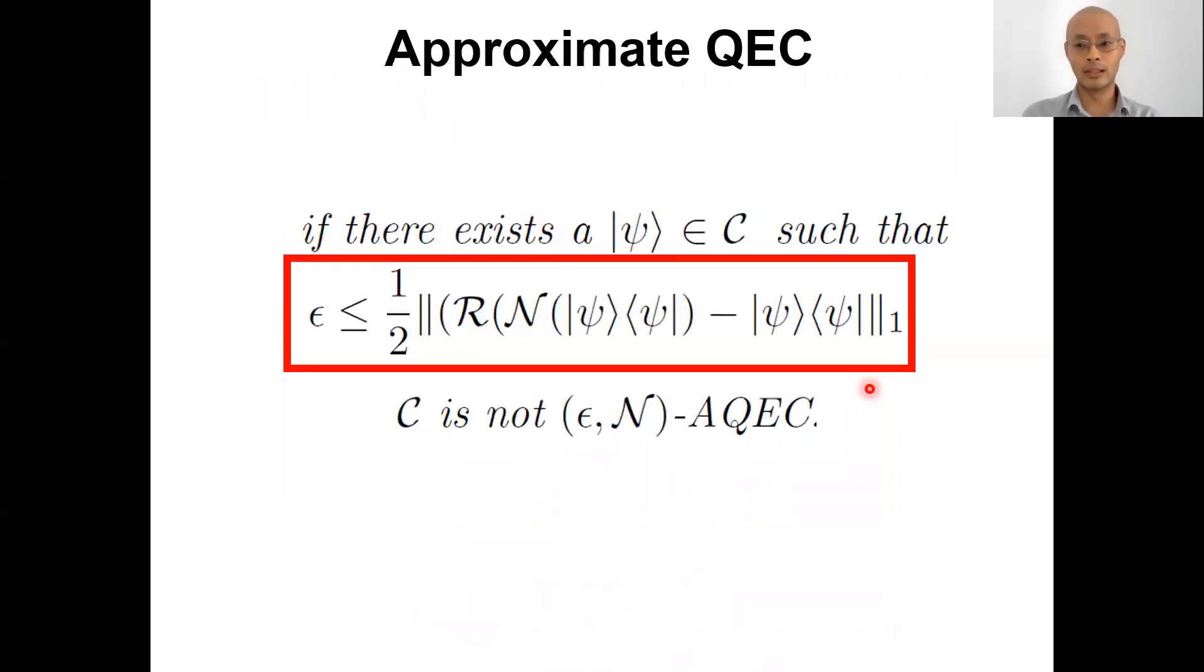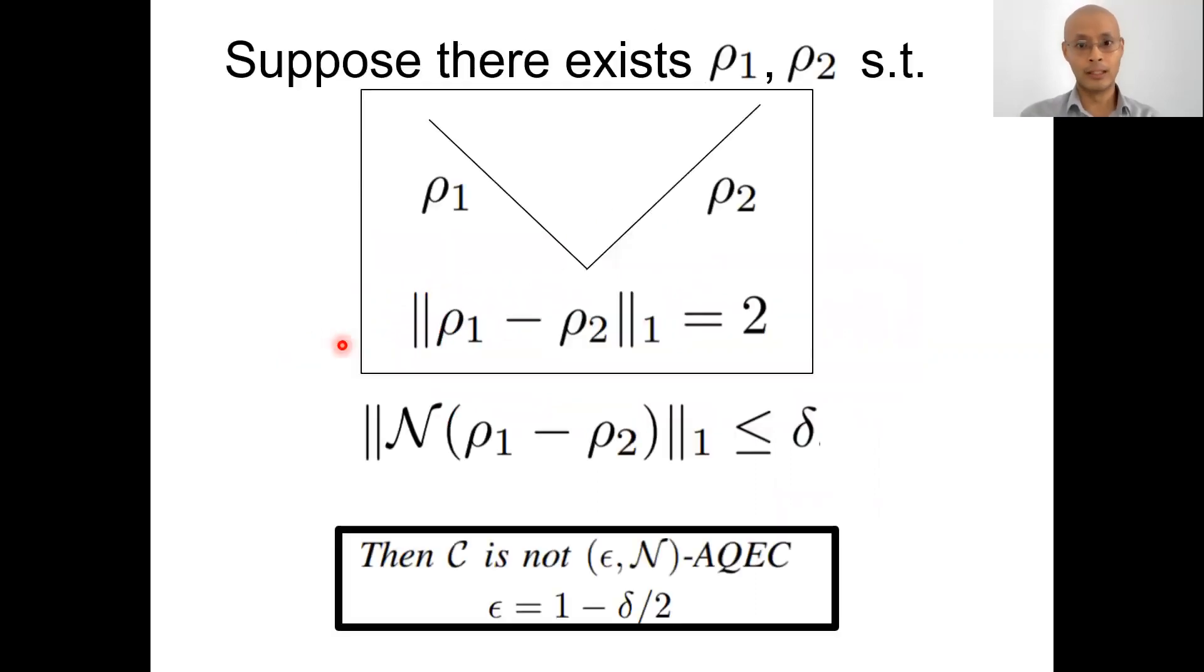And how do we show this result? First of all, we need to understand what we mean by approximate quantum error correction. By this we mean that the residue error cannot be too small. And to show this result, let us have this important lemma.